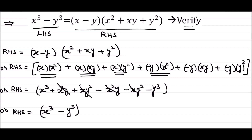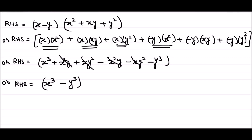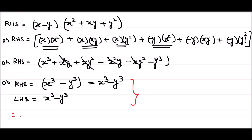Looking back at the original equation, the left hand side is x cube minus y cube. The right hand side also simplified to x cube minus y cube. Therefore, right hand side equals left hand side. Hence verified.